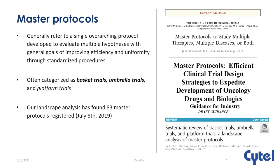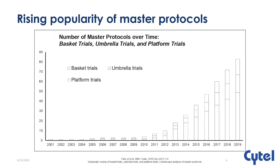We completed a landscape analysis of master protocols that have been either published or registered on clinical trial registries. We conducted the first search a month after the FDA released their draft guidance, and updated the search again through peer review to satisfy BMC Trials. As of July 2019, there were 83 master protocols registered — though even a couple of months later, this number was highly outdated. The number of accumulating master protocols registered in clinical trial research has been rising at a rapid pace over the last 10 years.